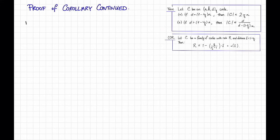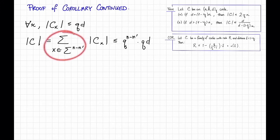Let's go on to a new slide and recall that we just showed that for all x, the size of c sub x is at most q times d. Now, I claim that we have the size of c is equal to the sum over all x and sigma to the n minus n prime times the size of c sub x. That's because the size of c sub x is just the number of code words in c that start with x, and every code word in c has to start with something, so just add them all up. Now, applying what we just learned, we see that this is at most q to the n minus n prime times qd, using the fact that this sum has q to the n minus n prime things in it.